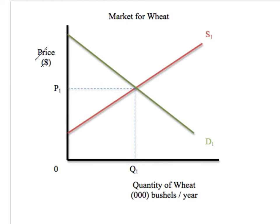You need all 11 of those components on a graph in order to begin any microeconomic question, whether it be a price floor, a price ceiling, a shift in supply, a shift in demand, an indirect tax diagram, or a per unit subsidy diagram. Those components are all the same.